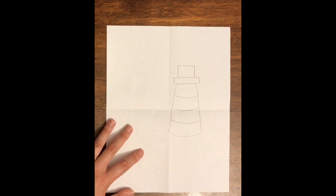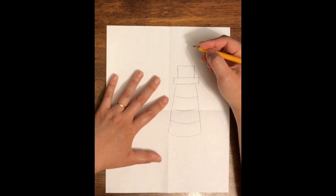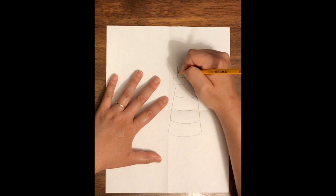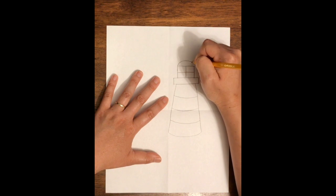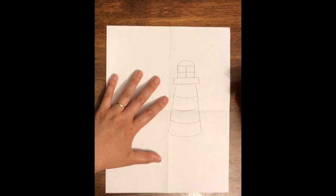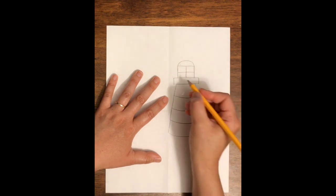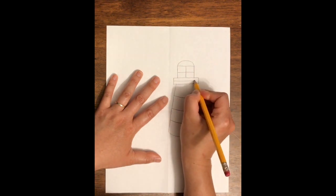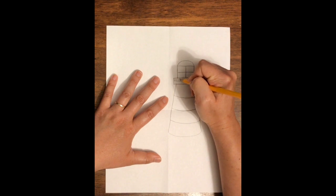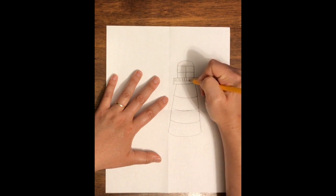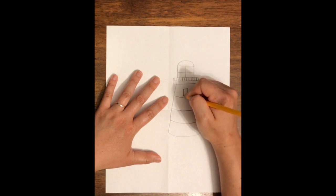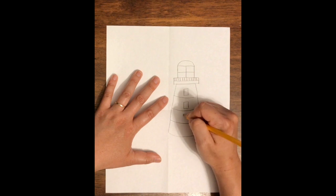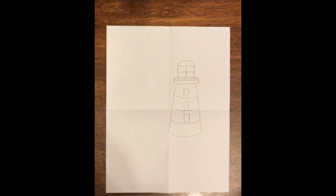Step three: add the windows and the details. Go ahead and draw the windows in the top of the lighthouse and draw the top over it. You can also draw extra detail by cutting that rectangle in half and drawing little lines as the railing for the lighthouse. Then add little rectangular windows down the middle of the lighthouse body, which could be for the stairwell to look out from.